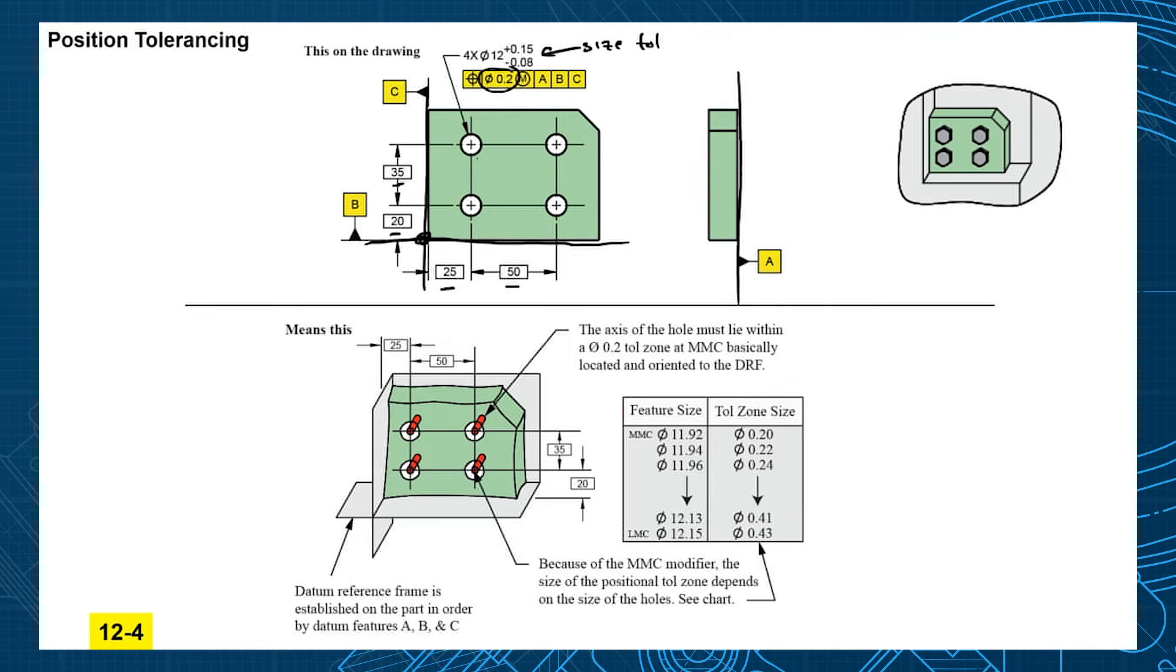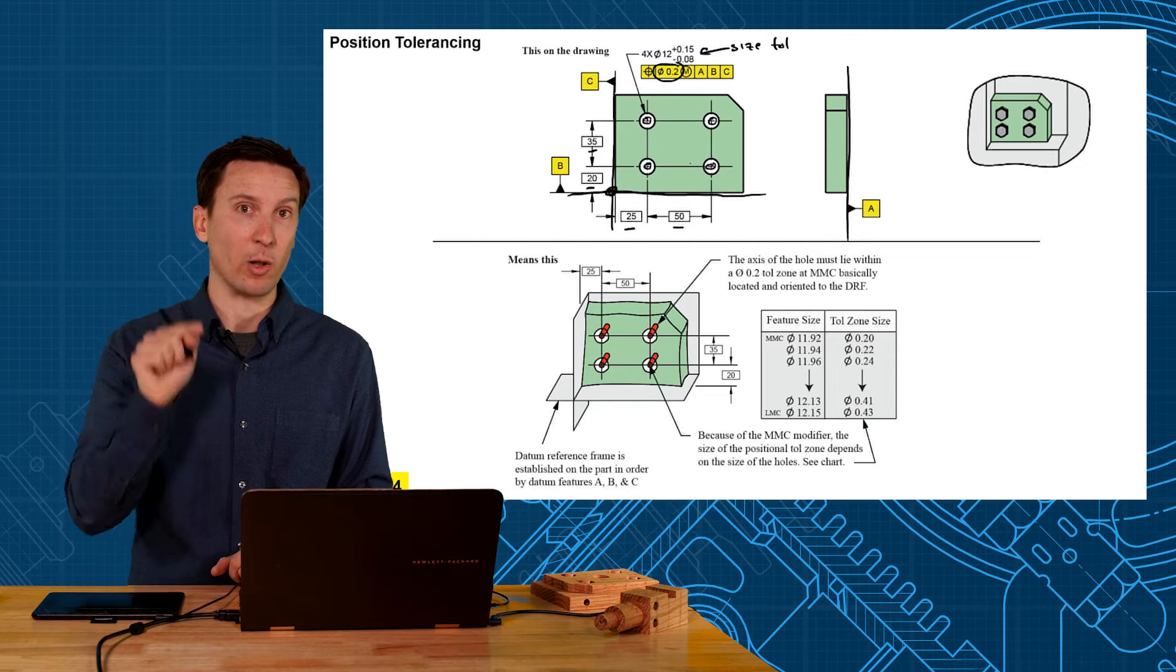What I like about position tolerance is you can draw it. They're going to be cylindrical shaped tolerance zones right on the true position. And now the axis of the hole has to lie within.